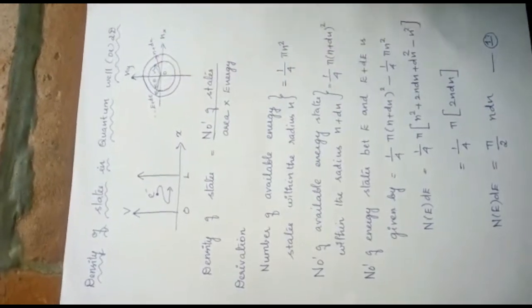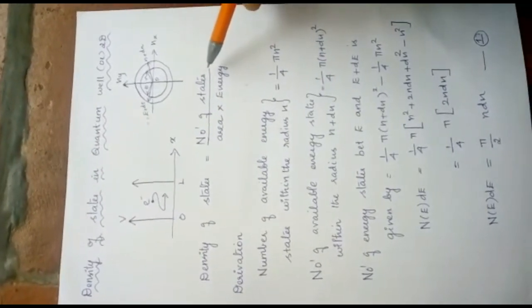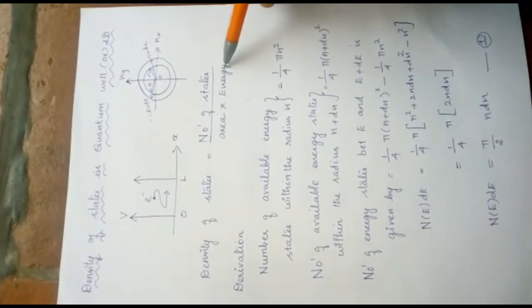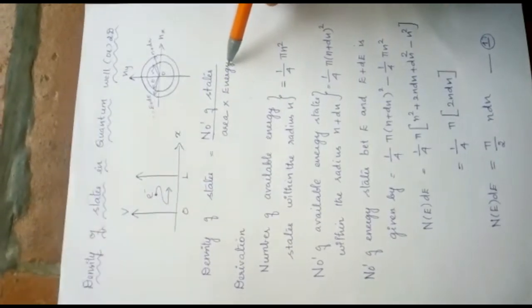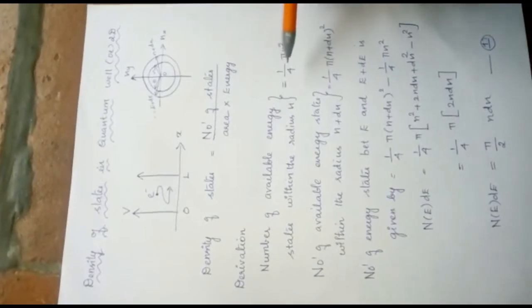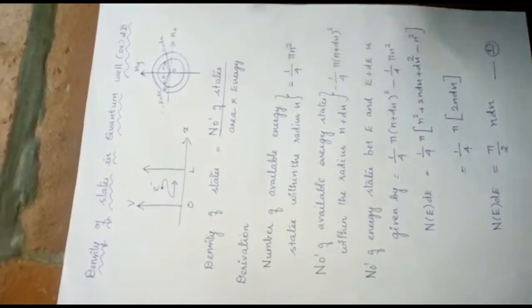Now, we are going to calculate the density of states. The formula for density of states in a two-dimension is number of states per unit area into energy. Next, we will see the derivation. We already know the formula for number of available energy states. Here, we are going to consider the radius up to n.